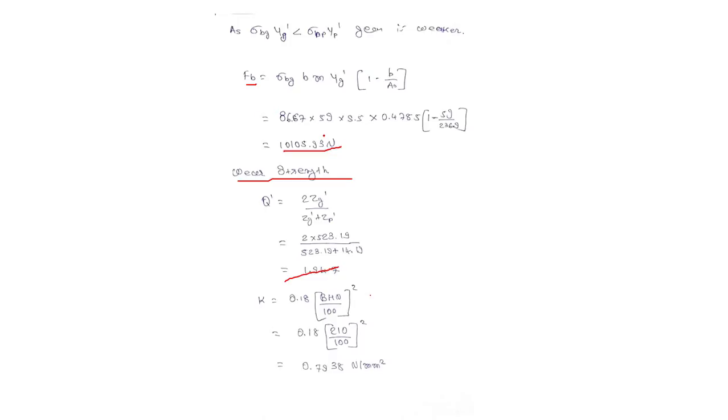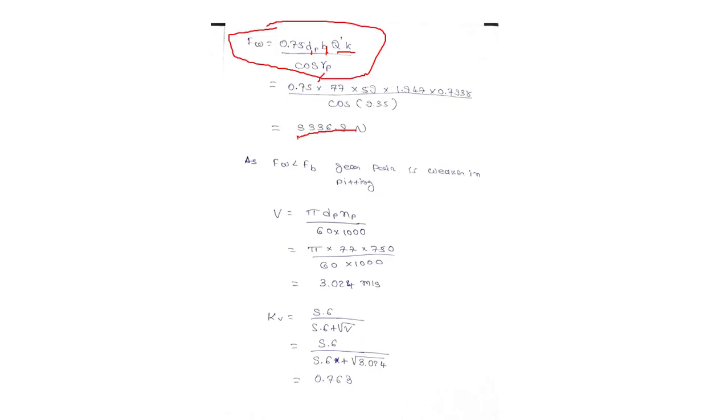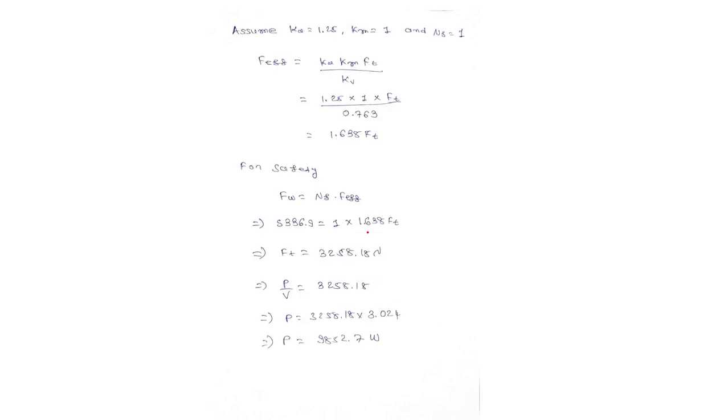Now we have value of Fb and Fw. Fb is 10000 plus and Fw is 5000 plus, so from that we can say that Fw is less than Fb. So the gear is weaker in pitting. For further calculation we will use Fw.